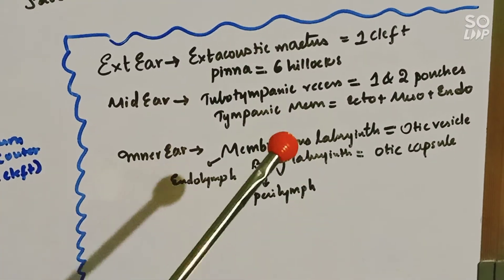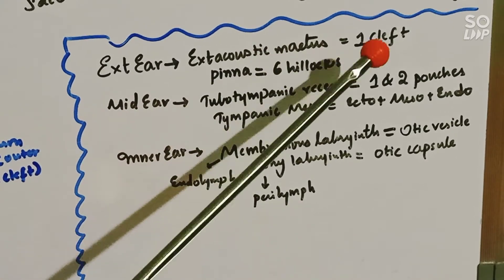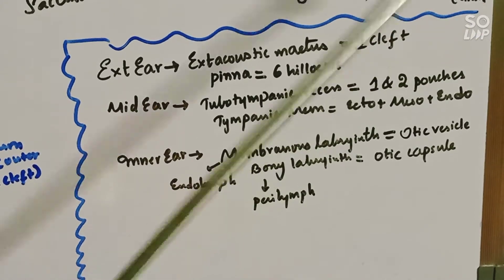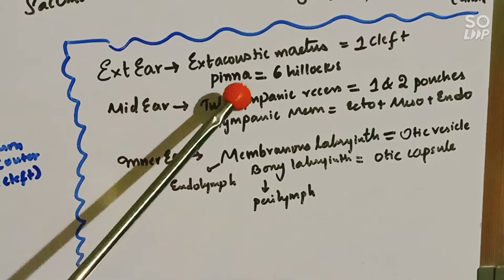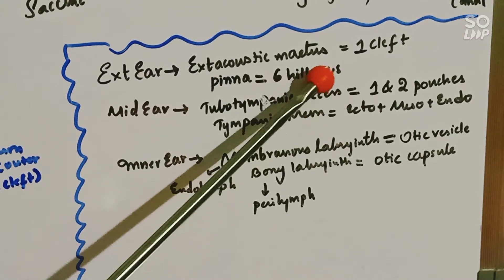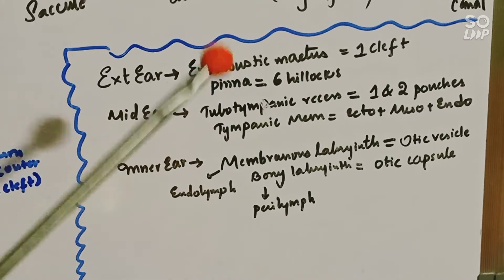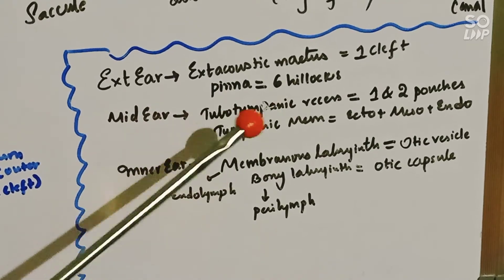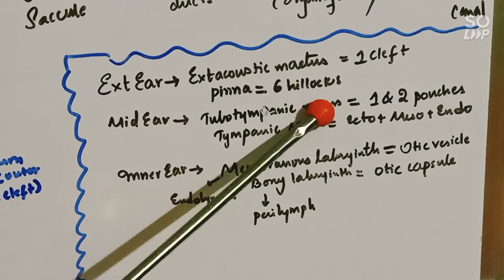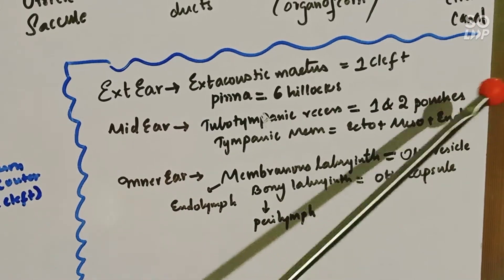Now let us review all the points of the ear. The external ear has the external acoustic meatus, which is formed from the first cleft. The first cleft is of ectodermal origin. Next, we have the pinna, which is made up of six hillocks. Coming to the middle ear: it has the tubo-tympanic recess, also known as the Eustachian tube, which is made up of the first and second pouches. As they are made up of pouches, it is of endodermal origin.